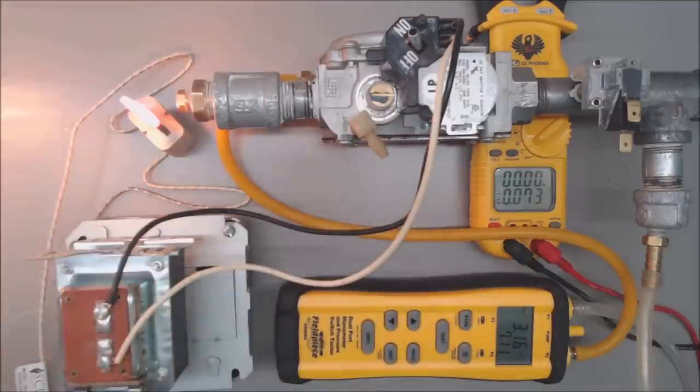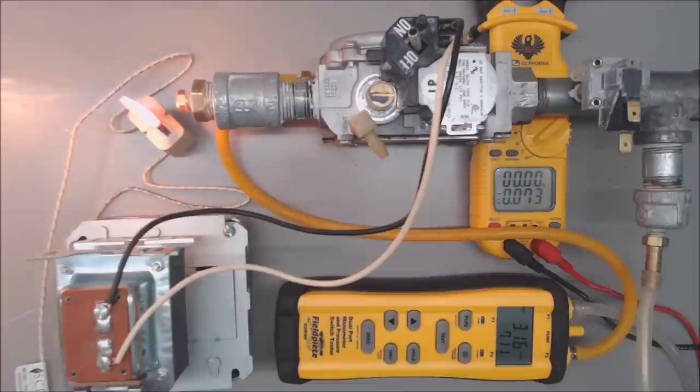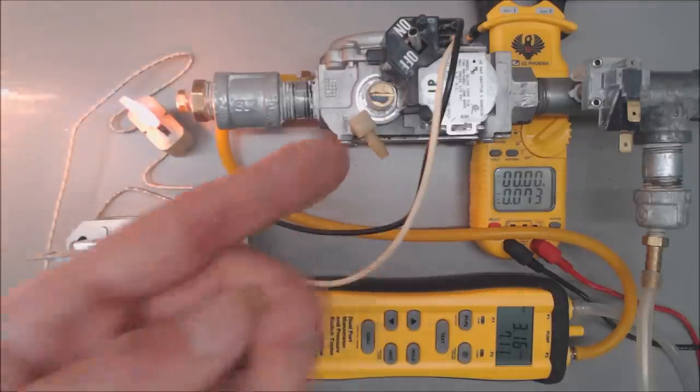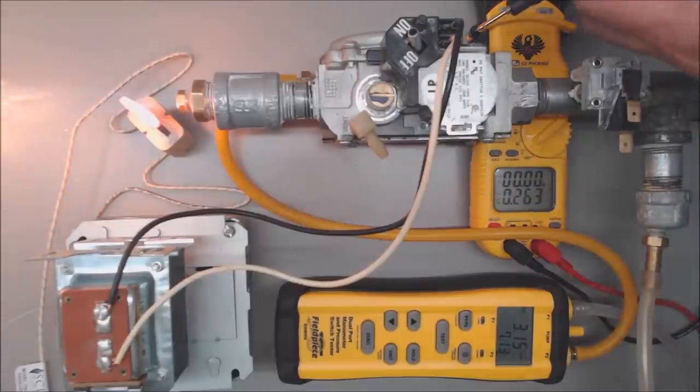So that could make a rough ignition. It may have just been rough igniting for a long period of time and then now it just won't ignite at all, but that's how you determine what the problem is. We also want to read our 24 volts.